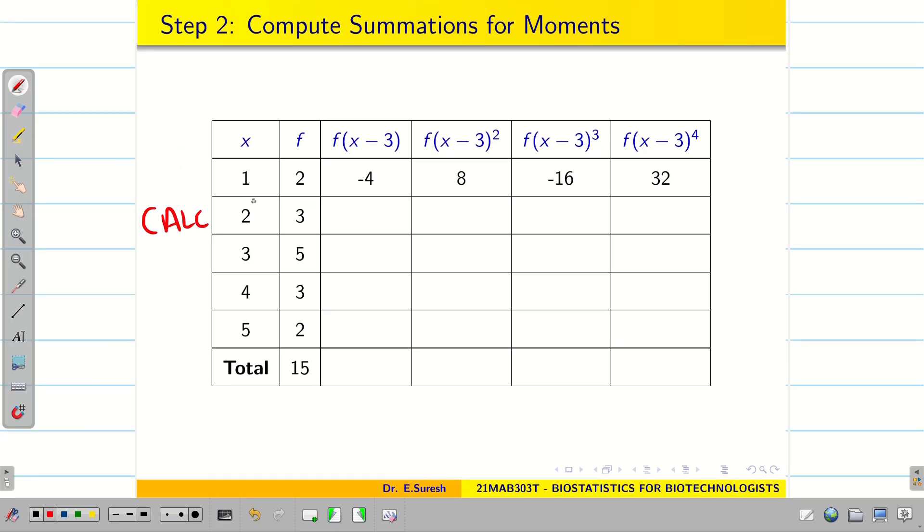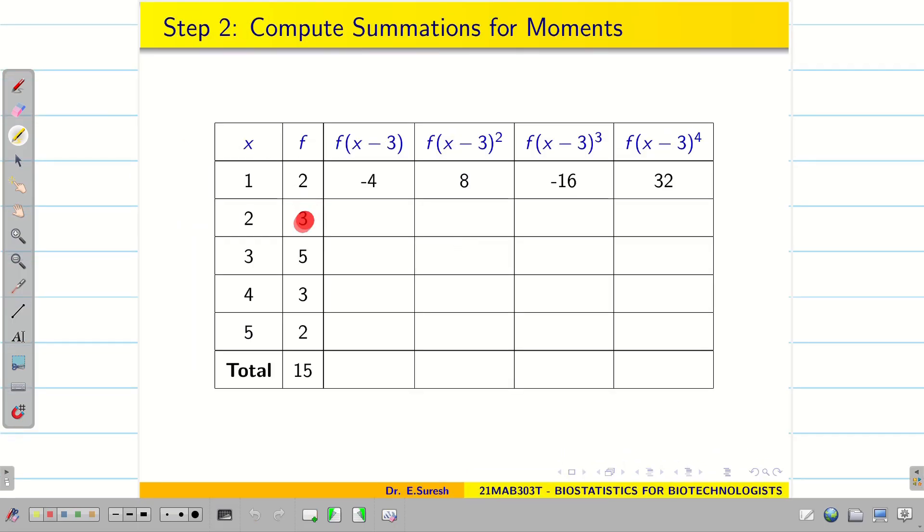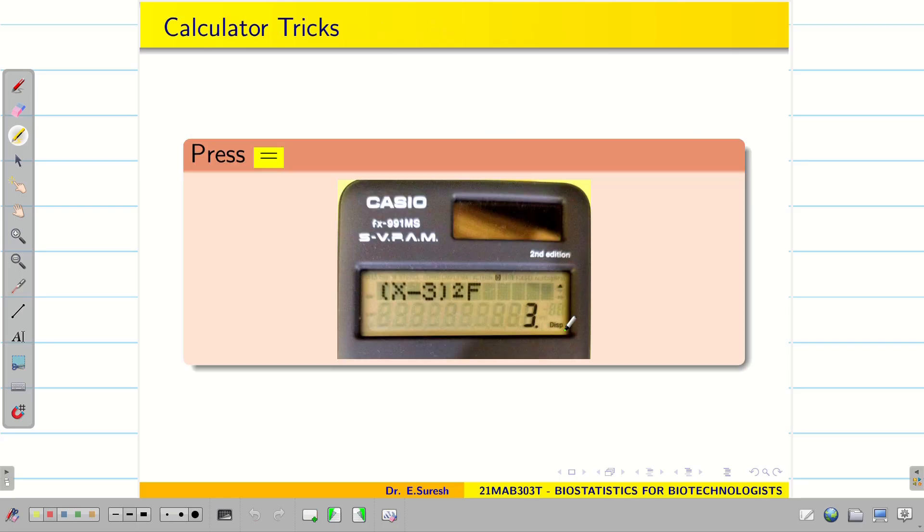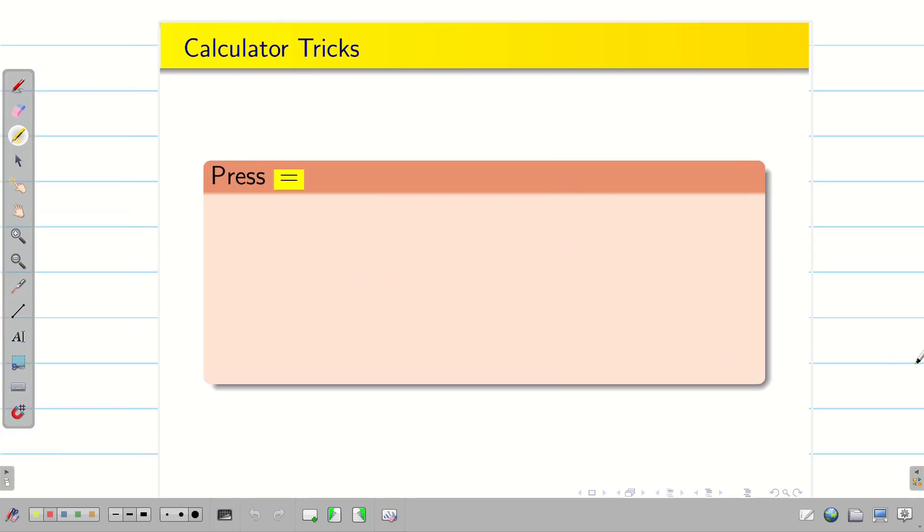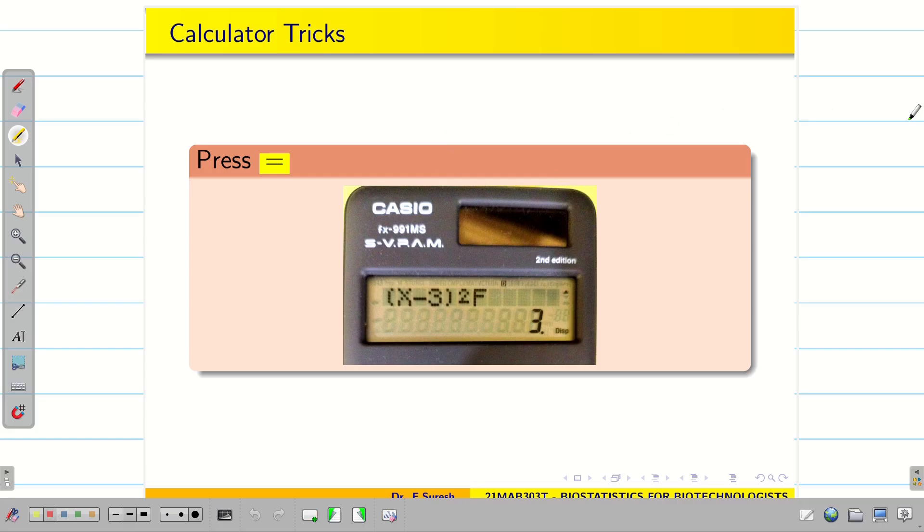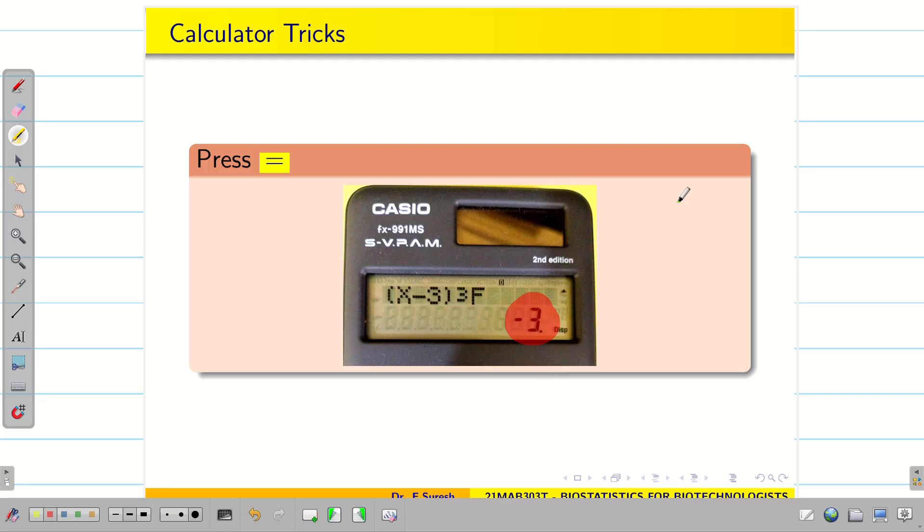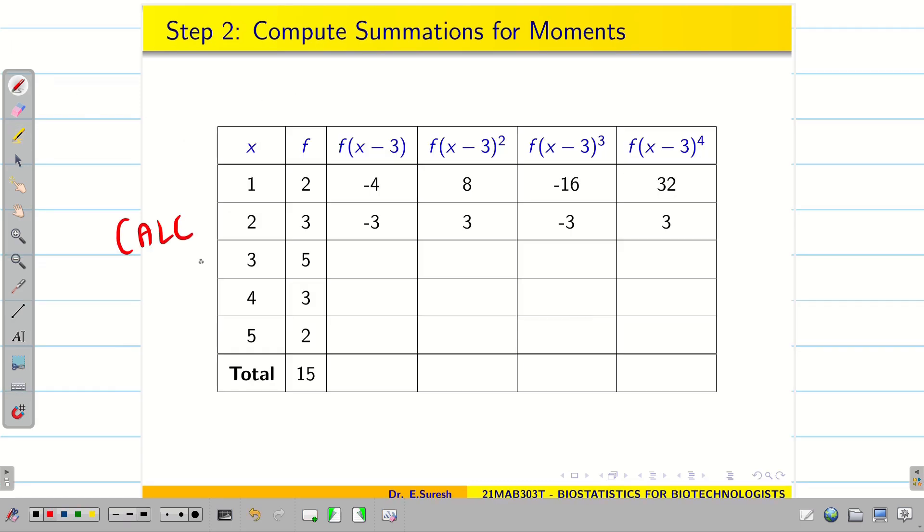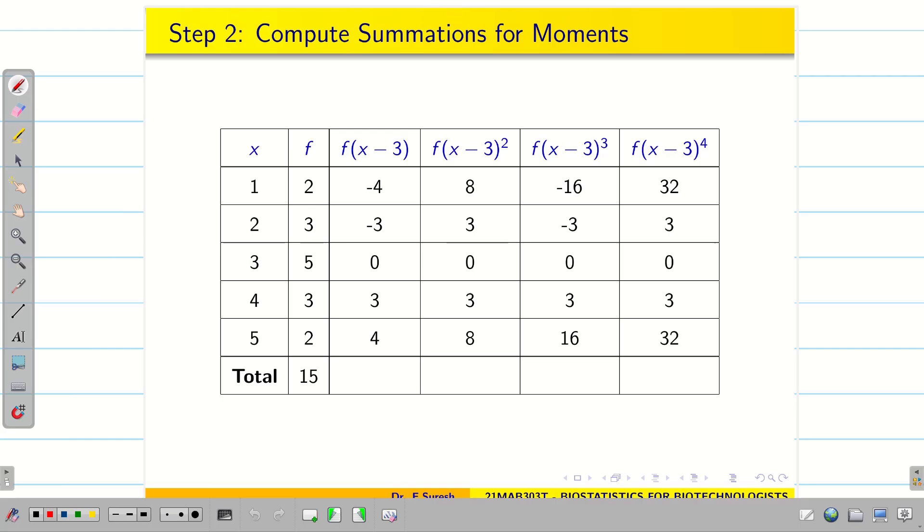Now press calc again. It will ask new x value. That is 2. Now enter 2. Press equal to. Then it will ask new f value. Go to the table. Take 3. Press 3. And press equal to. The beauty you can see. The values are minus 3. Fill here. Then plus 3. Fill in the next. Then minus 3. Fill next. And then plus 3. Once you press equal to, you can see the answer. f into x minus 3 minus 3. Enter. Then press equal to again. You get f into x minus 3 whole square. That is 3. Enter in the table. Then press equal to. f into x minus 3 whole cube. Then write in the table minus 3. Press equal to again. And you can see the final value is 3. In the similar way press calc. Enter x value and f value. Then copy the values from the calculator. Fill the table all the datas.